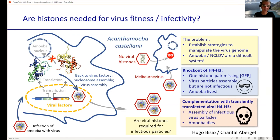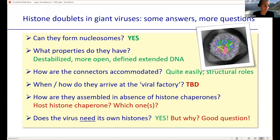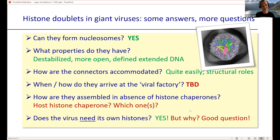To summarize: can viral histones form nucleosomes? Yes, though they are destabilized, more open, and have defined extended DNA. Higher order structures are unknown — something we're very interested in. The connectors are quite easily accommodated structurally. How they arrive at the viral factory we don't know — probably attracted by massive amounts of DNA. Who assembles them without chaperones? We're really curious. Does the virus need its own histones? Yes, but we still don't really know why.